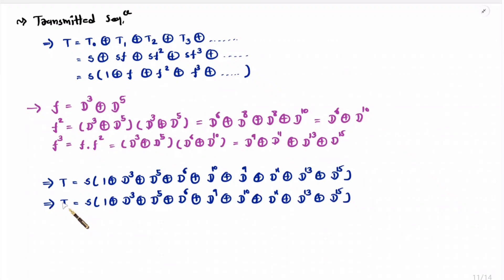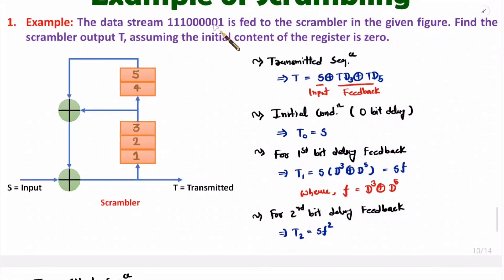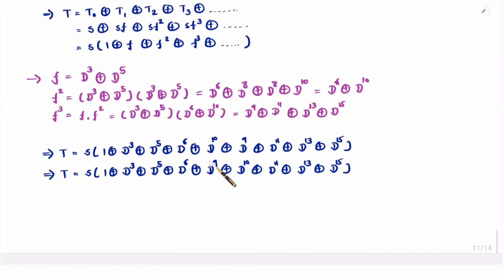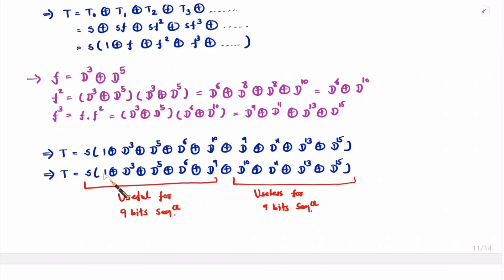The transmitted sequence T = S XOR S·d³ XOR S·d⁵ XOR S·d⁶ XOR S·d⁹. Since the input sequence has 9 bits, anything beyond d⁹ is useless. We only need to compute these five terms. Now, S = 111 00000 1 (triple 1, 5 times 0, and 1).